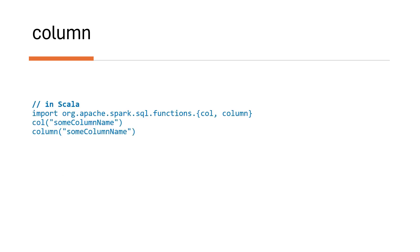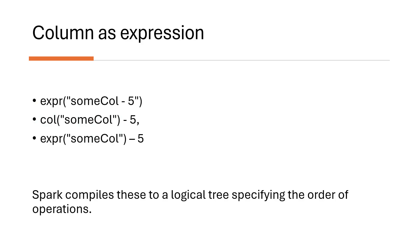To get the value of a column, you can use the column() or col() function and give a column name to reference that column in a DataFrame or Dataset. Columns can also be evaluated using expressions - using the expr() function you can give a column and perform operations on it. There are different ways to evaluate expressions for columns, but internally Spark creates a logical tree based on the order of operations.